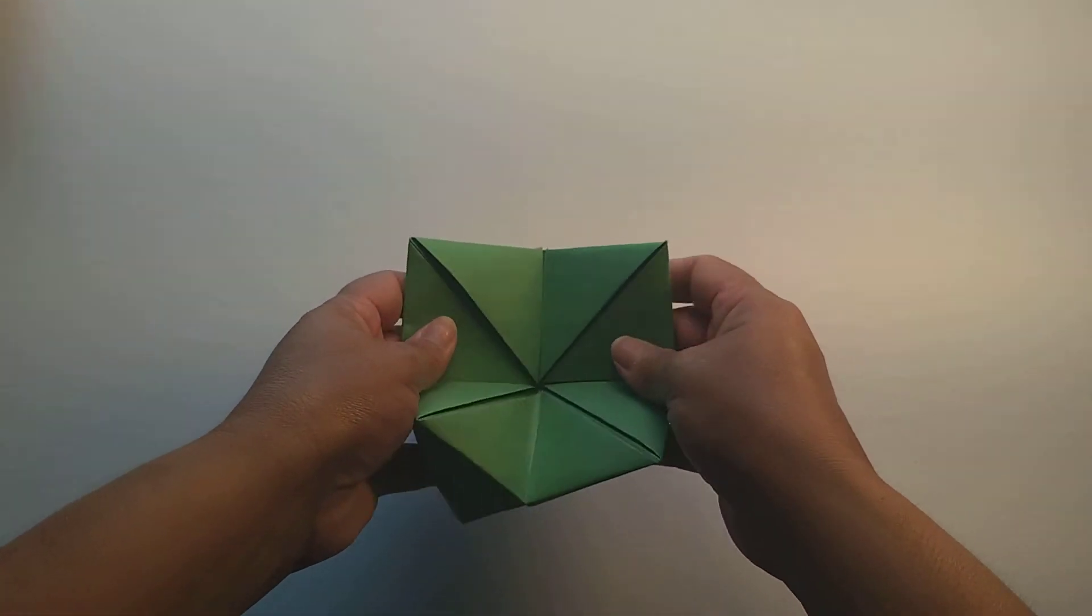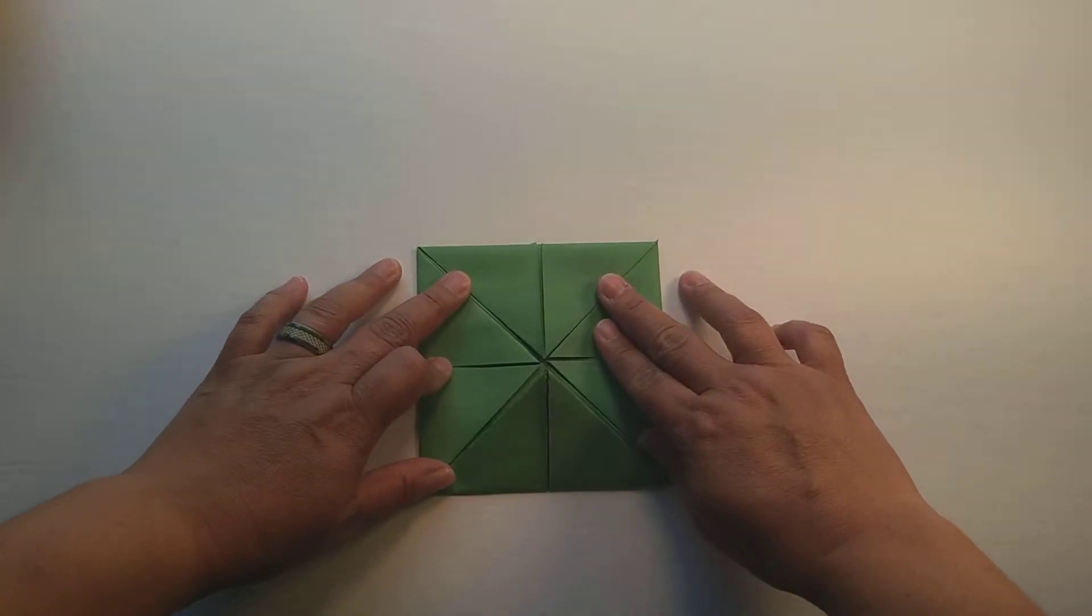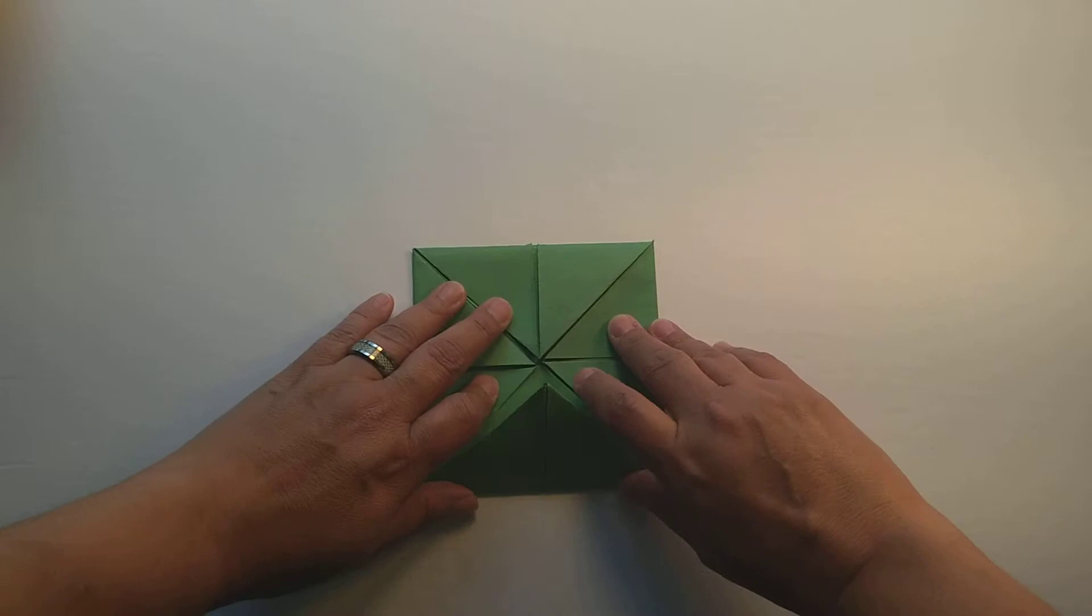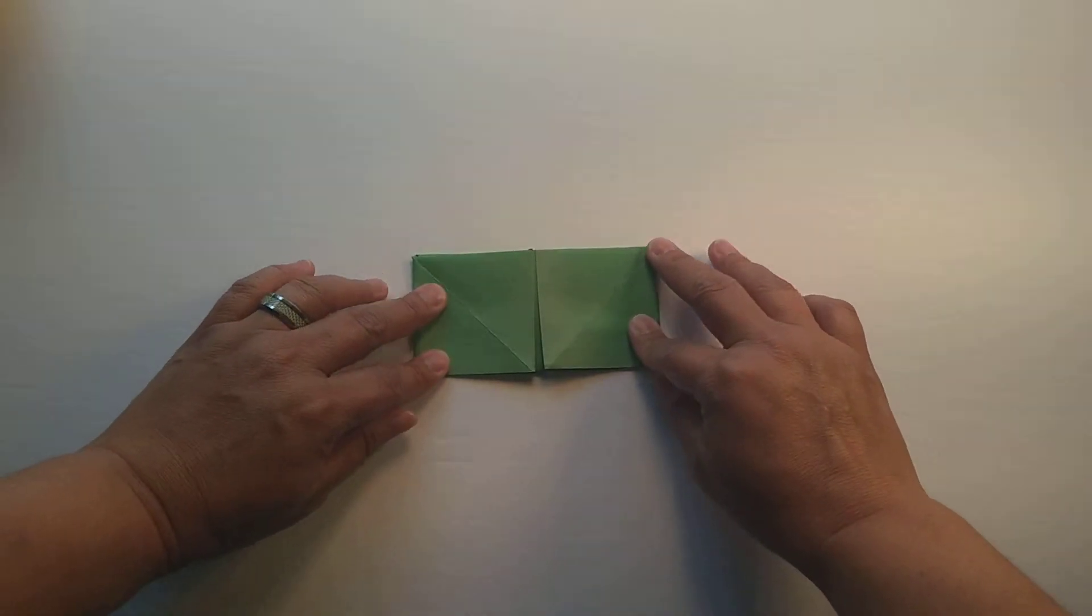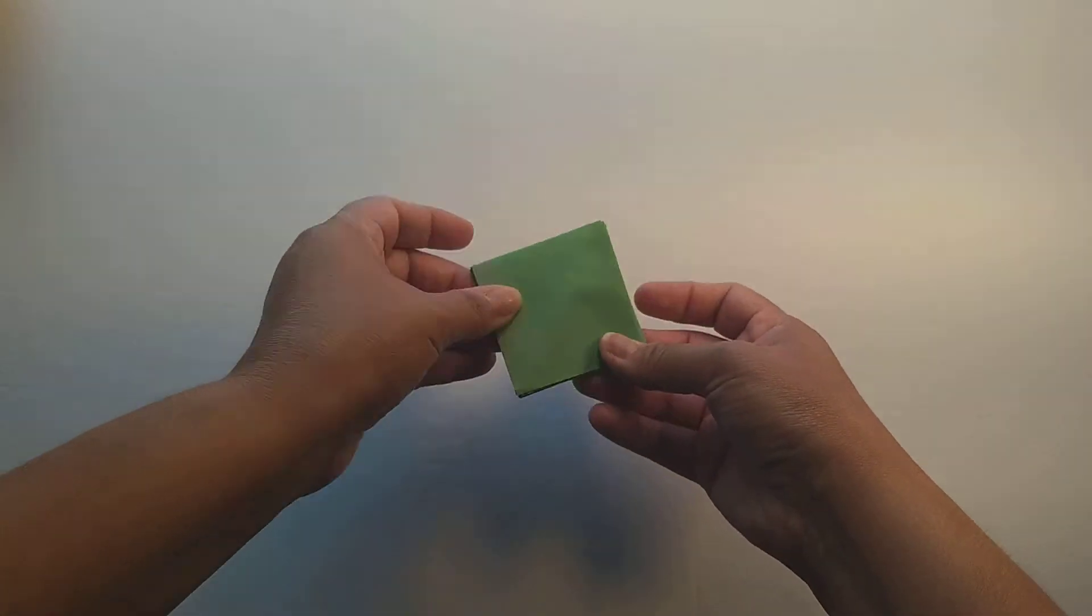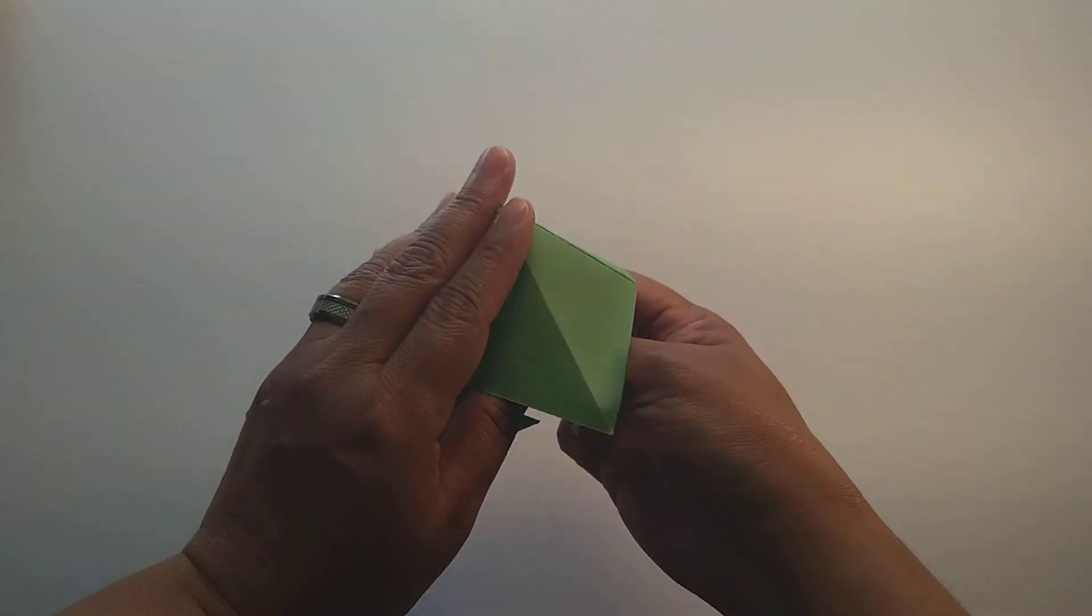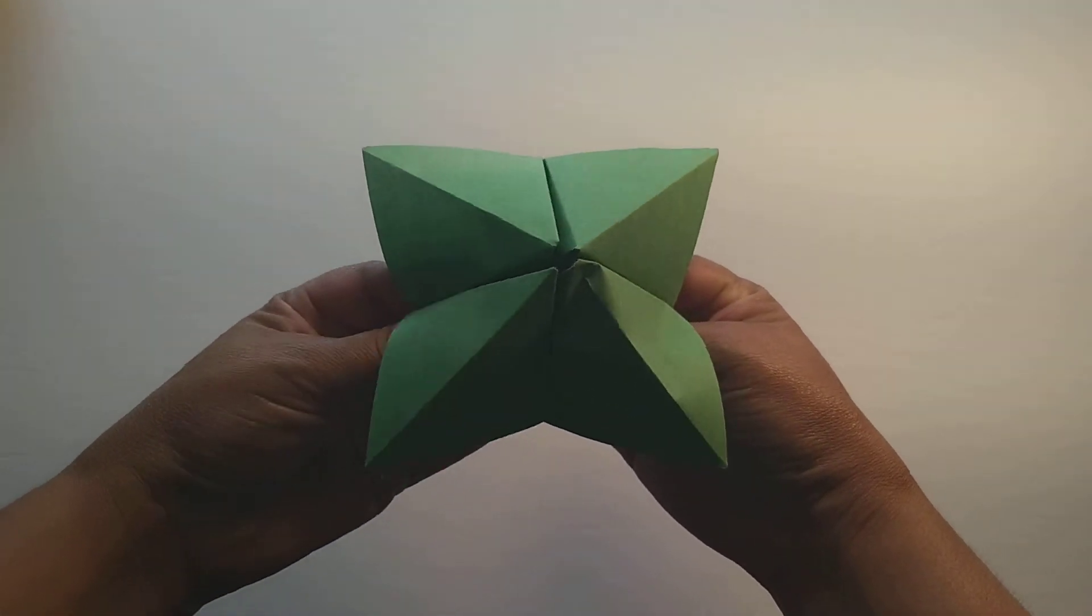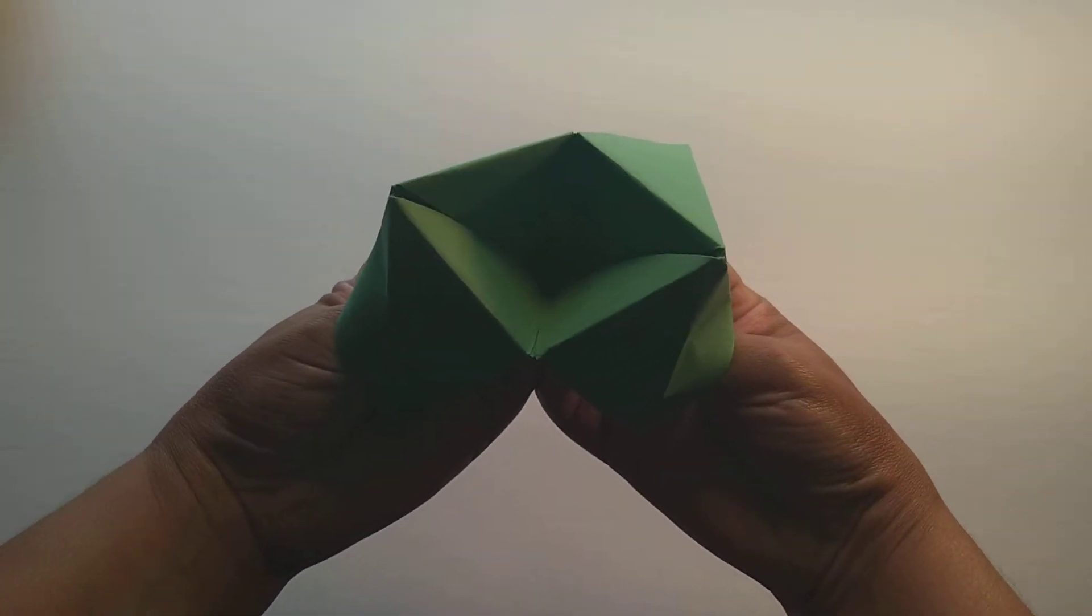So one more time from this part, and you can stop this video at any moment to see the step-by-step. But once you have it at this part of the step, you're going to fold in and you're going to fold again. Then once you open, you're going to open along this side and form the cootie catcher.